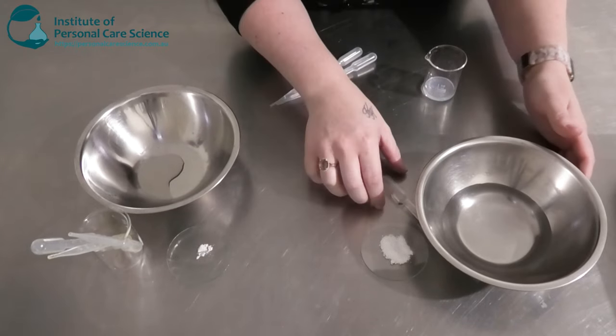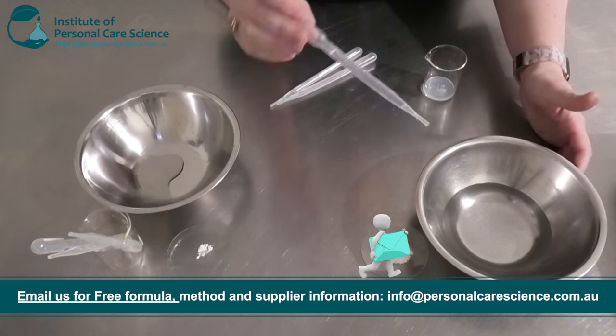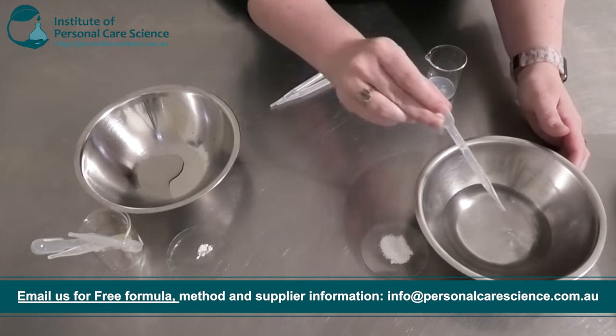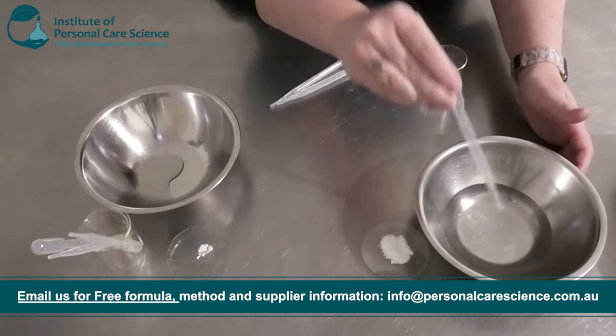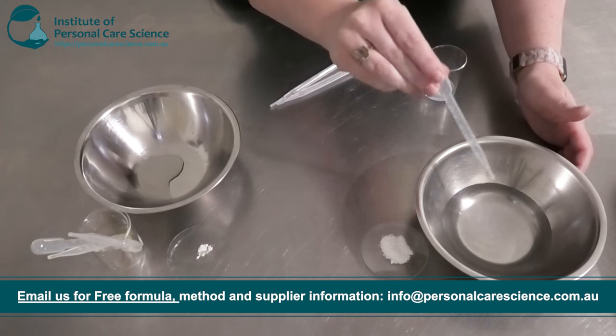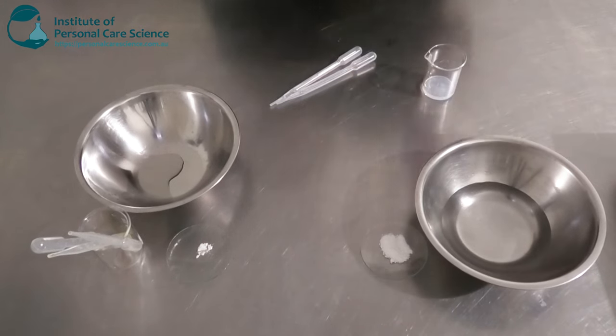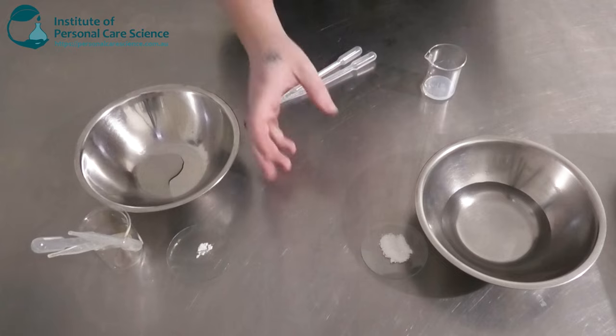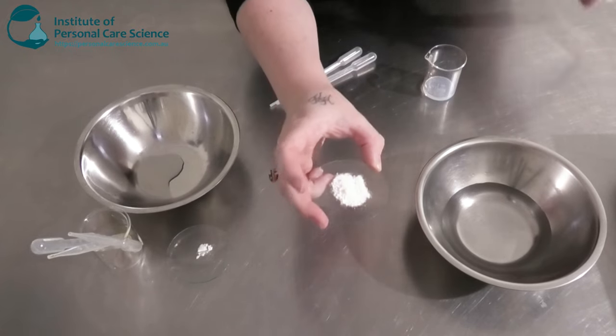Okay so here I have my phase A ingredients and to this I'm going to add some propanediol. This is a humectant. This is going to help condition the skin and to this I'm going to add my polymer. So I'm going to go in with some Sepi Max Zen.